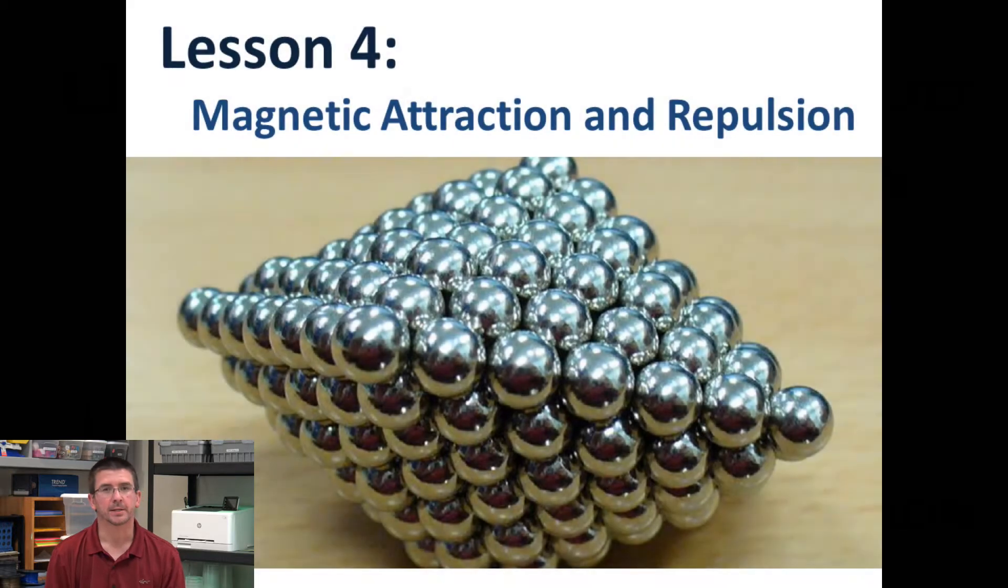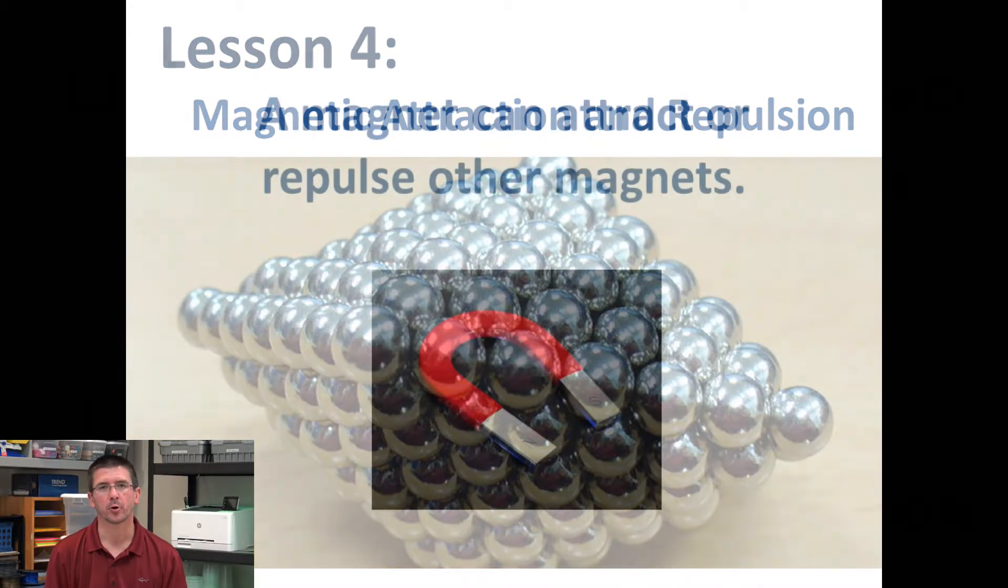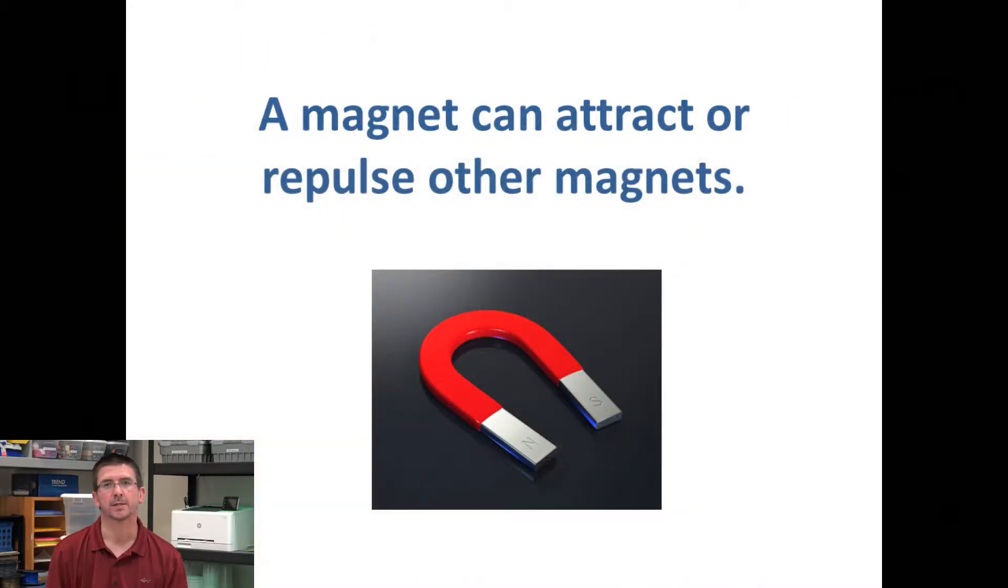Today we're going to be talking about this concept of magnetic attraction and repulsion. We've talked about one of the properties of a magnet being its ability to either attract, that means to pull on other magnets, or to repel or push away other magnets.